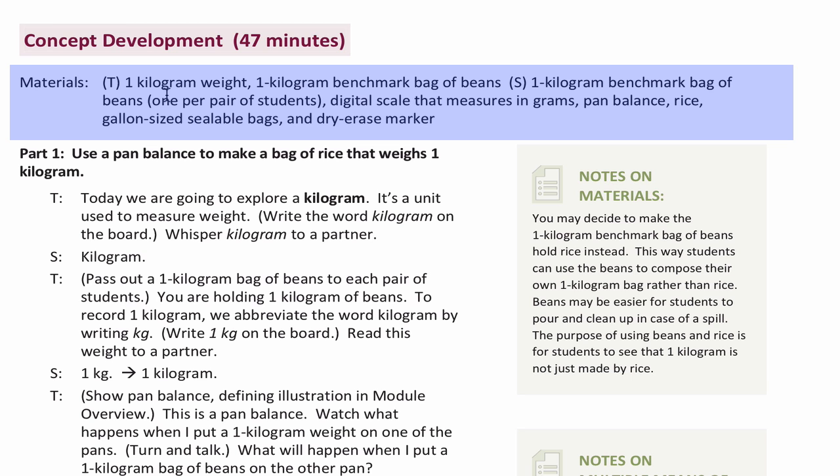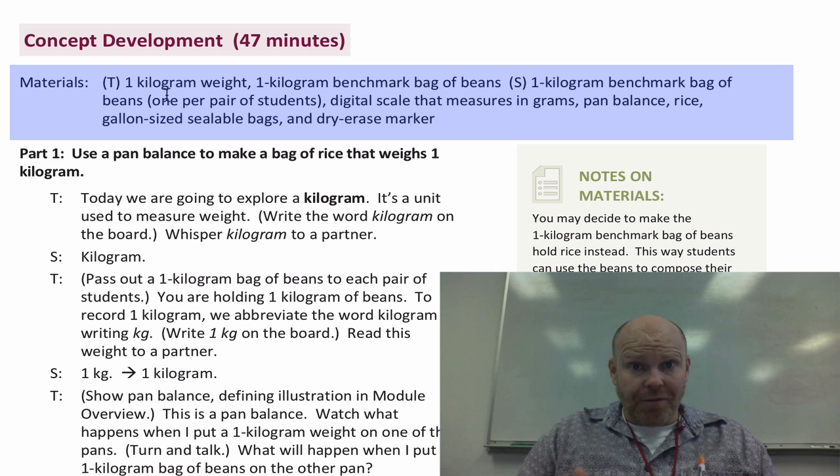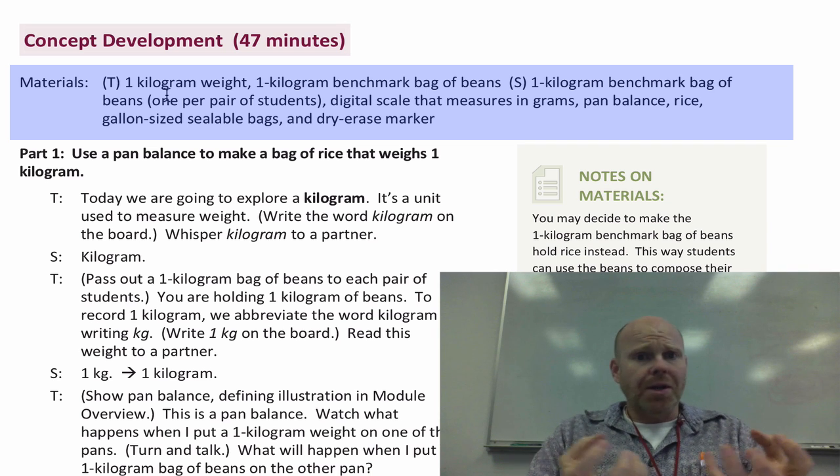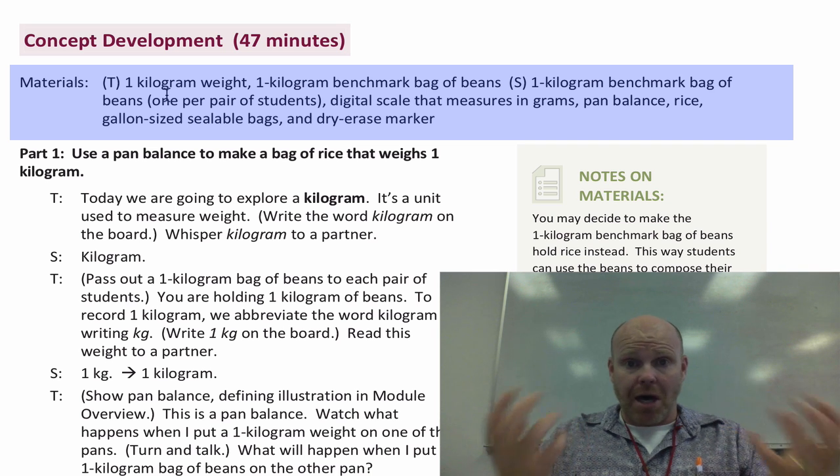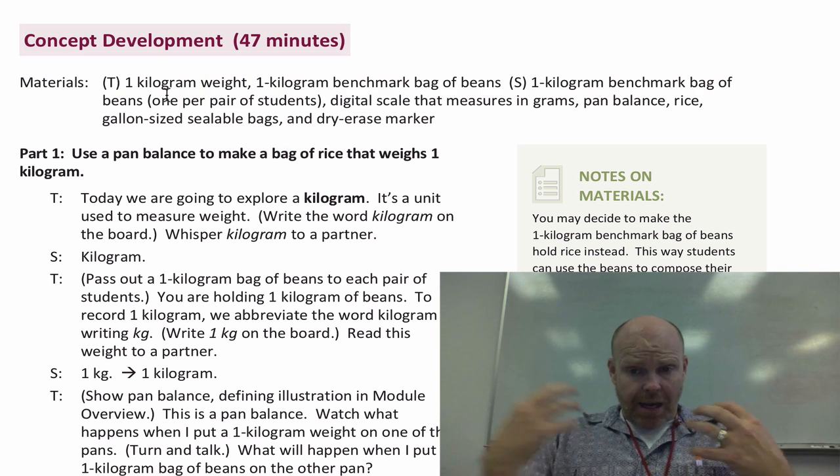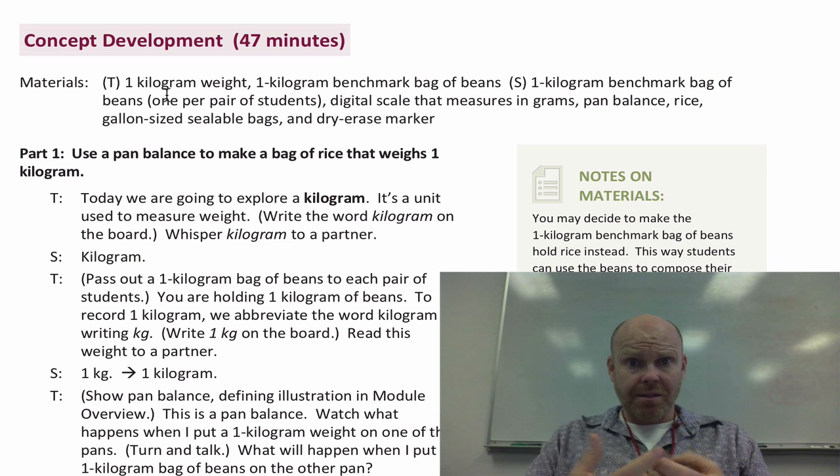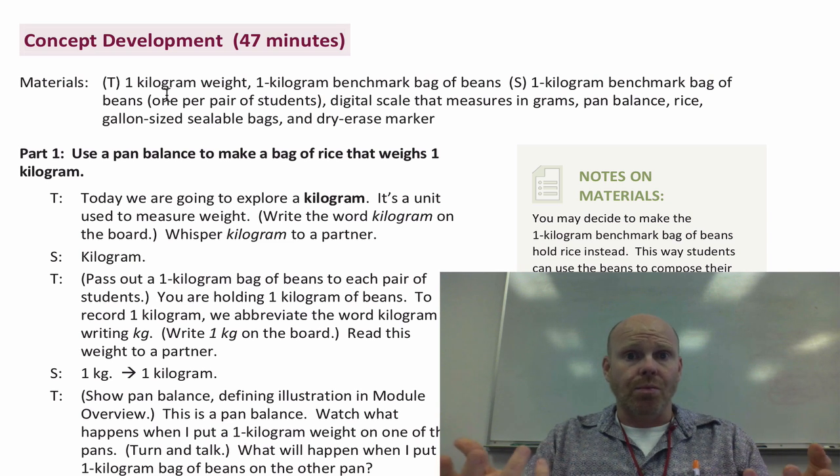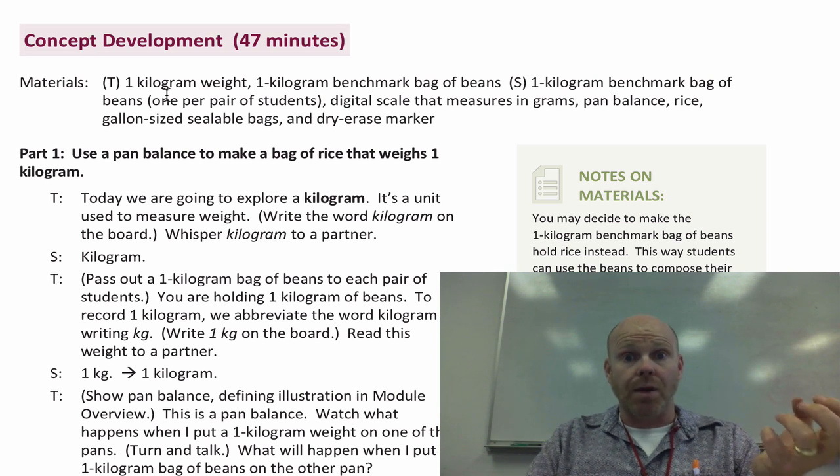You could get on your bathroom scale, weigh yourself, and then hold an object—maybe a bottle of water or something—and see if that adds 2.2 pounds to your weight. If it does, you just found what a kilogram is.